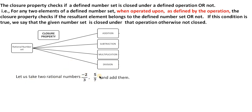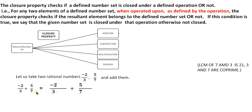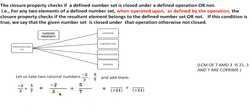Let us take two rational numbers randomly. You know how to add them. We are adding them. The denominators 7 and 3 are different, so these are unlike rational numbers. We need to make them like rational numbers by forming their equivalents. We need the base to be the LCM of 3 and 7. The LCM of 3 and 7 is 21. So we need to make both fractions have denominator 21.